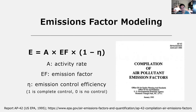Similarly, a lower emission factor combined with a higher activity rate — like a lower-paying job where you work more hours — can still result in higher total emissions. This fairly simple approach is described in the EPA manual AP-42, published in 1995, with many chapters updated since then as new emission factors become available.